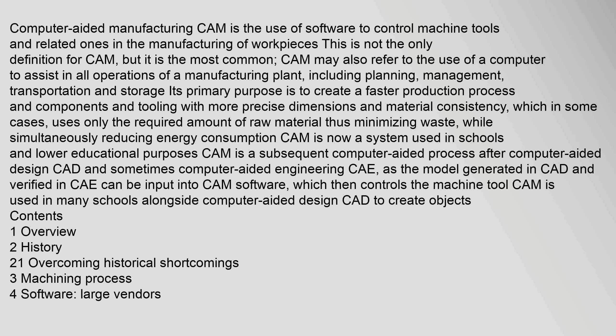Computer-aided manufacturing, CAM, is the use of software to control machine tools and related ones in the manufacturing of workpieces. This is not the only definition for CAM, but it is the most common. CAM may also refer to the use of a computer to assist in all operations of a manufacturing plant, including planning, management, transportation and storage.